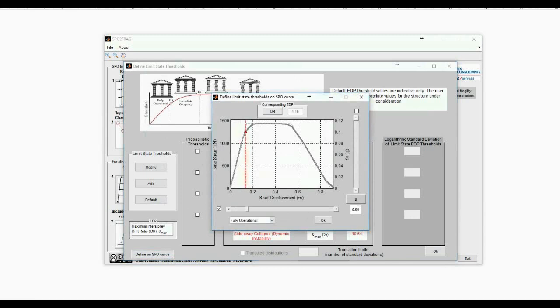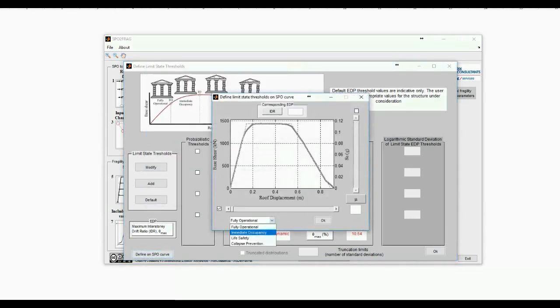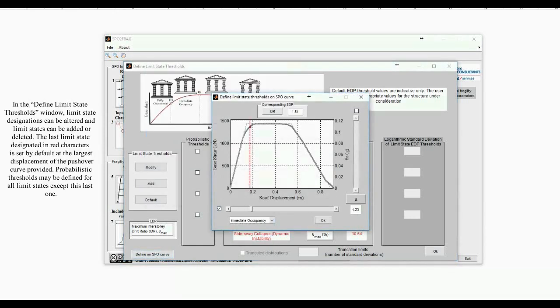We repeat the procedure for the immediate occupancy limit state. This time, we choose a displacement corresponding to a 2% interstory drift that brings us to the beginning of the plateau of the pushover curve.